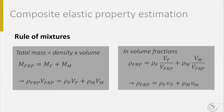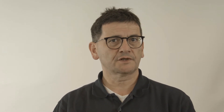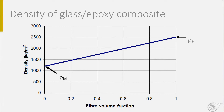Next we can divide both sides of the equation by the volume of the composite and we get weight fractions, represented in the fourth formula by the small letter. In the given ideal case, the sum of both fractions should be equal to 1. We now have a simple linear equation for the density. If we use this equation for a specific composite, here a glass fiber epoxy, we see that the composite density is a linear function of the fiber volume fraction.